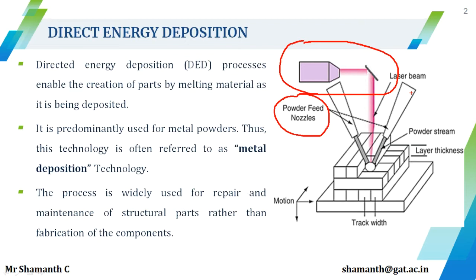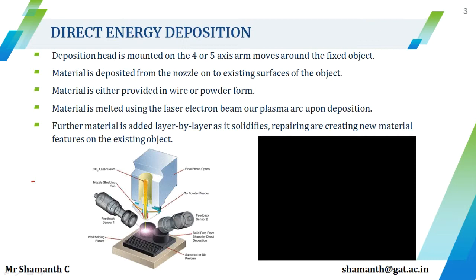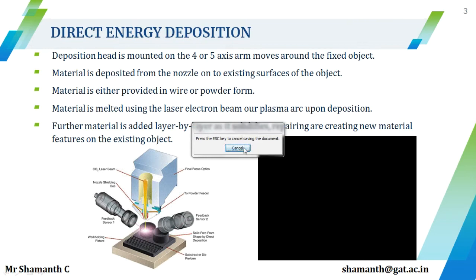The process steps are as follows. The deposition head is mounted on a 4 or 5 axis arm which moves around the fixed object. The object on which material has to be deposited is placed on the platform. The material is then deposited from the nozzle onto the existing surfaces of the object. The material is either provided in wire or powder form.